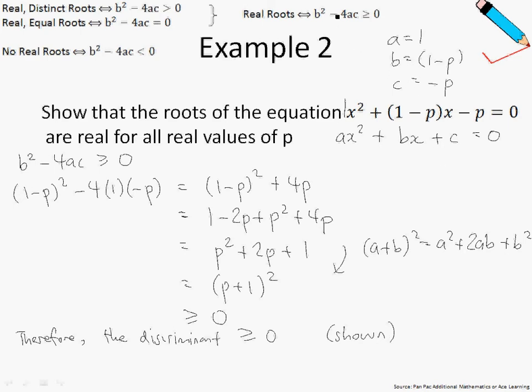Just in case you're still feeling confused — at the top of the screen, for real roots, the discriminant is always greater than or equal to 0. This is what we needed to show in this question.